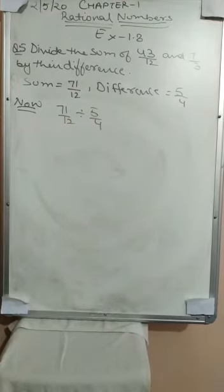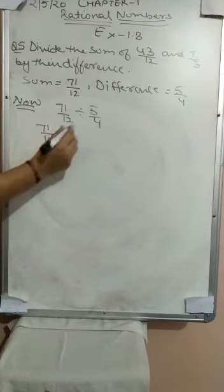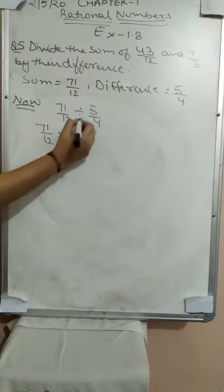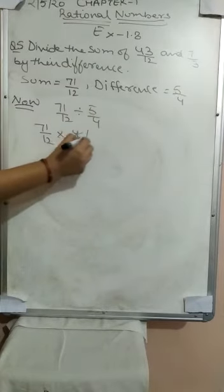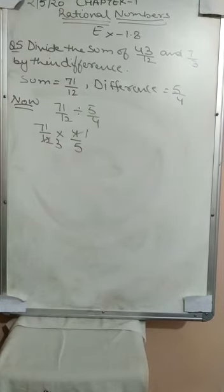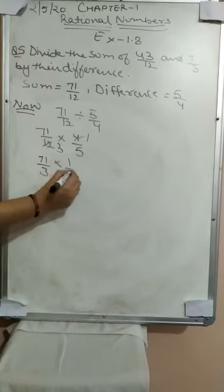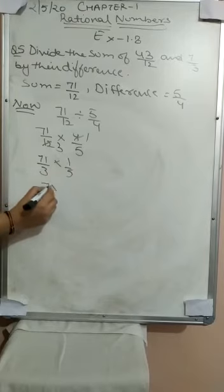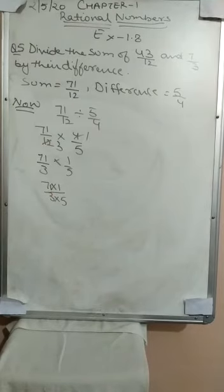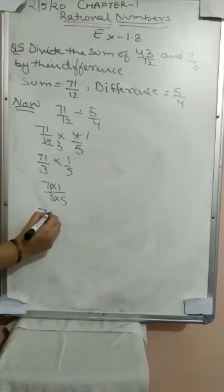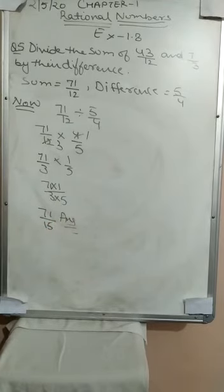You know how to divide? For dividing, we have to take the reciprocal. So we write 71/12 multiplied by 4/5 — the sign changes and numerator and denominator swap. 12 and 4 cancel to give 3. So we are left with 71/3 multiplied by 1/5. Product of numerators over product of denominators gives us 71/15. So the answer is 71/15.